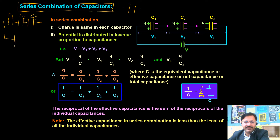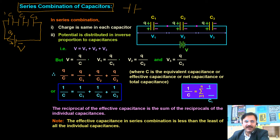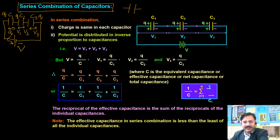When three capacitors are connected in series with a battery of voltage V, the same charge Q appears on each capacitor, but the potential difference across each capacitor is different: V1, V2, and V3. The definition of series combination: whenever two or more capacitors are connected such that the charge on each capacitor is the same, the combination is said to be a series combination.